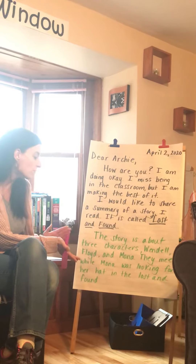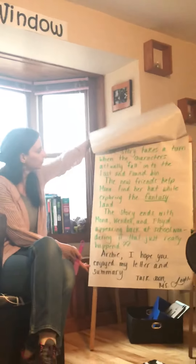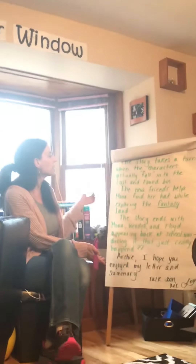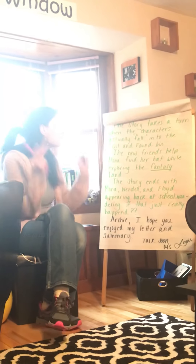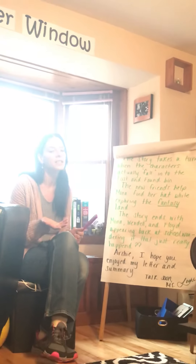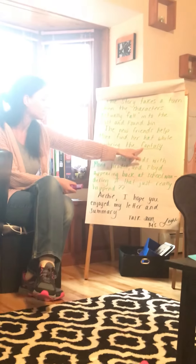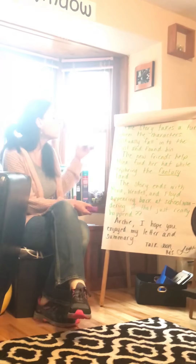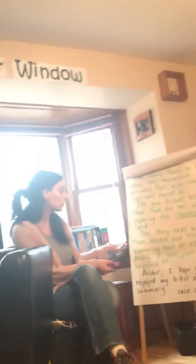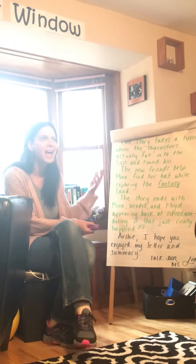They meet while Mona was looking for her hat in The Lost and Found. The story takes a turn when the characters actually fall into The Lost and Found bin. We have to ask ourselves, can that really happen? So it's a fantasy story. The new friends help Mona find her hat while exploring the fantasy land — I talked about that genre, fantasy. And here's my ending: the story ends with Mona, Wendell, and Floyd appearing back at the school wondering if that just really happened.